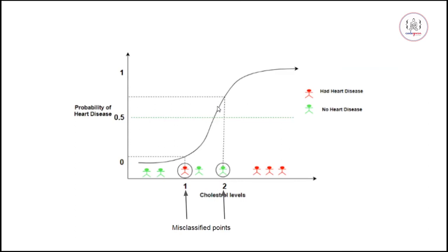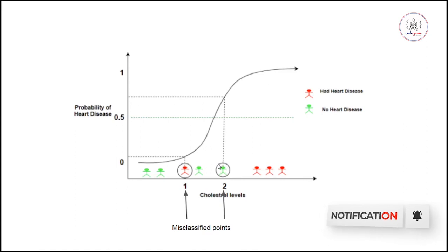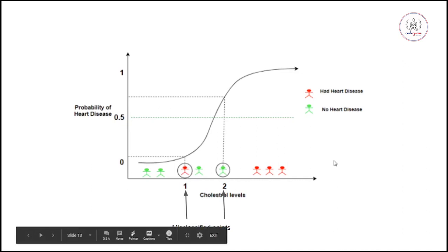Anything above 0.5 is classified as having heart disease. By setting this threshold to 0.5, we do a good job predicting, but we also have two misclassified points. One person has a high cholesterol level and is classified as having heart disease, but in actuality does not. Similarly, another person with low cholesterol does have heart disease but is classified as not having it, giving us two misclassified points.